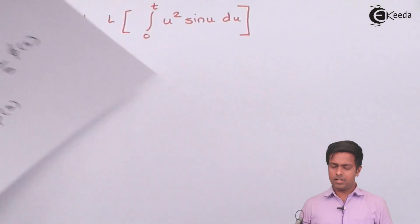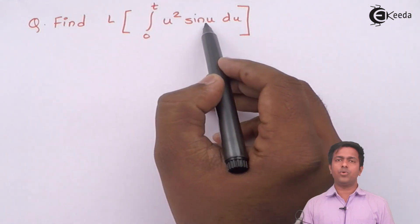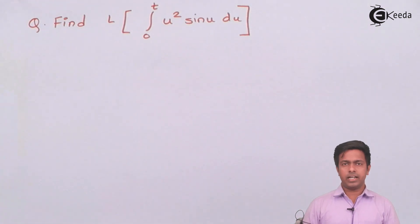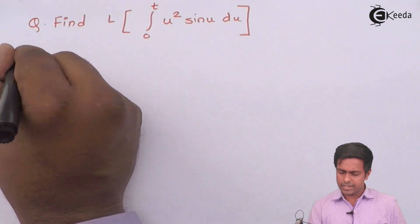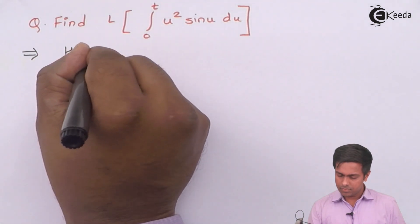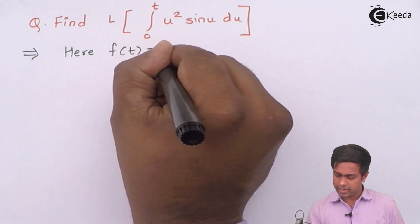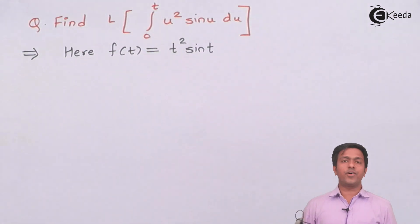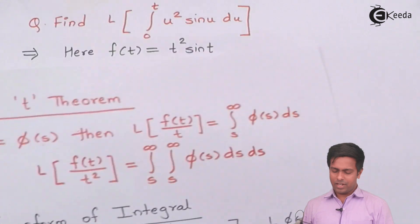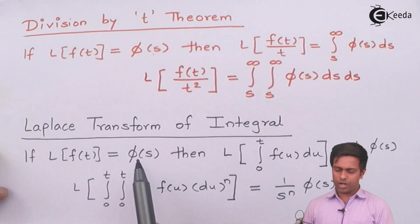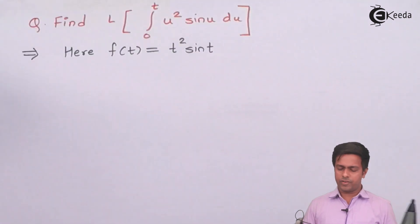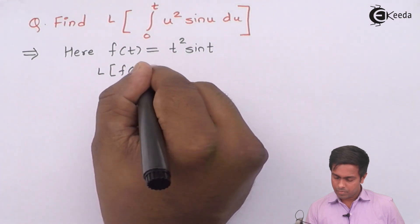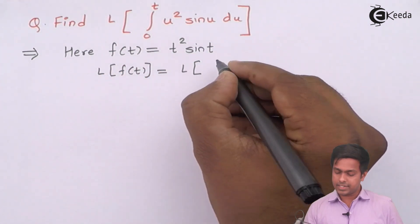Here, from 0 to t, the term u² sin(u) is f(u), and as discussed, we treat f(u) as f(t). So f(u) or f(t) is t² sin(t). We are going to find the Laplace transform of this f(t), because L{f(t)} = φ(s), and we will use that φ(s) to find the final answer. So L{f(t)} = L{t² sin(t)}.